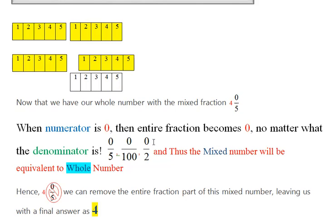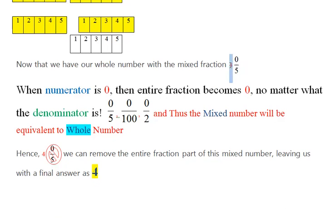If the numerator is 0, that fraction has to be removed or has to be eliminated. And that next number that we got, we will only consider this whole number, which is to be used. So, we can remove the entire fraction, leaving us with the final answer as 4.